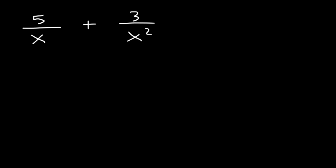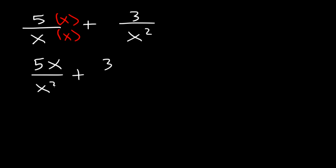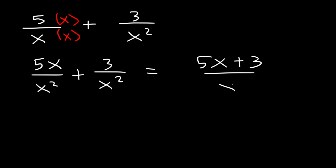Before we can combine the two fractions we need to get common denominators. We need to multiply the first fraction on the left by x over x so that the denominators will both be x squared. So this is 5x over x squared plus 3 divided by x squared. Now we can write this as a single fraction: 5x plus 3 over x squared. That's the answer.